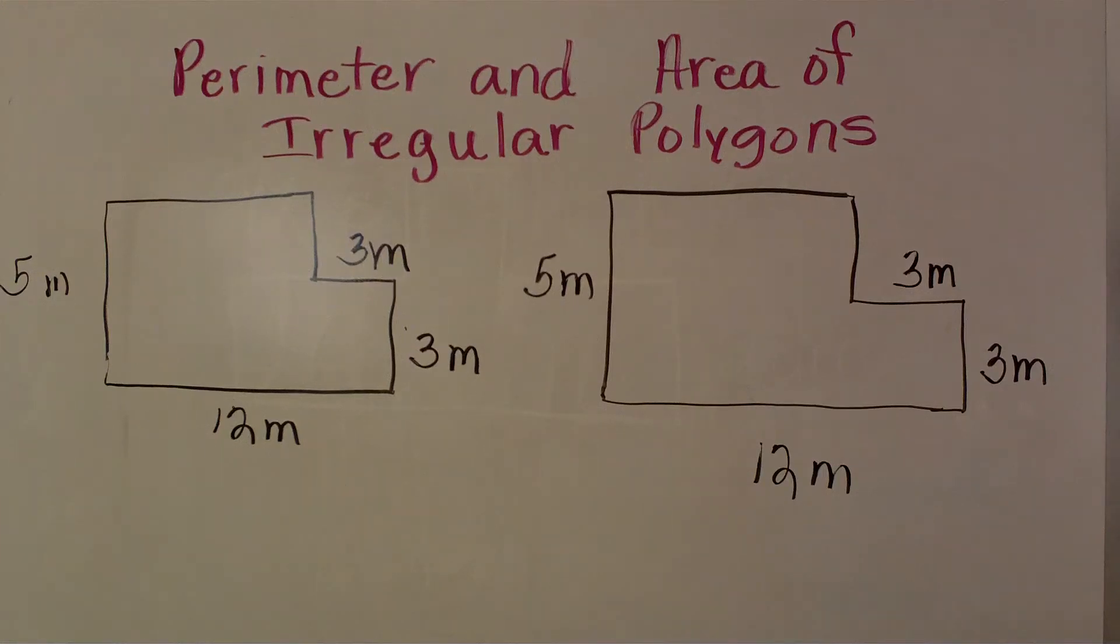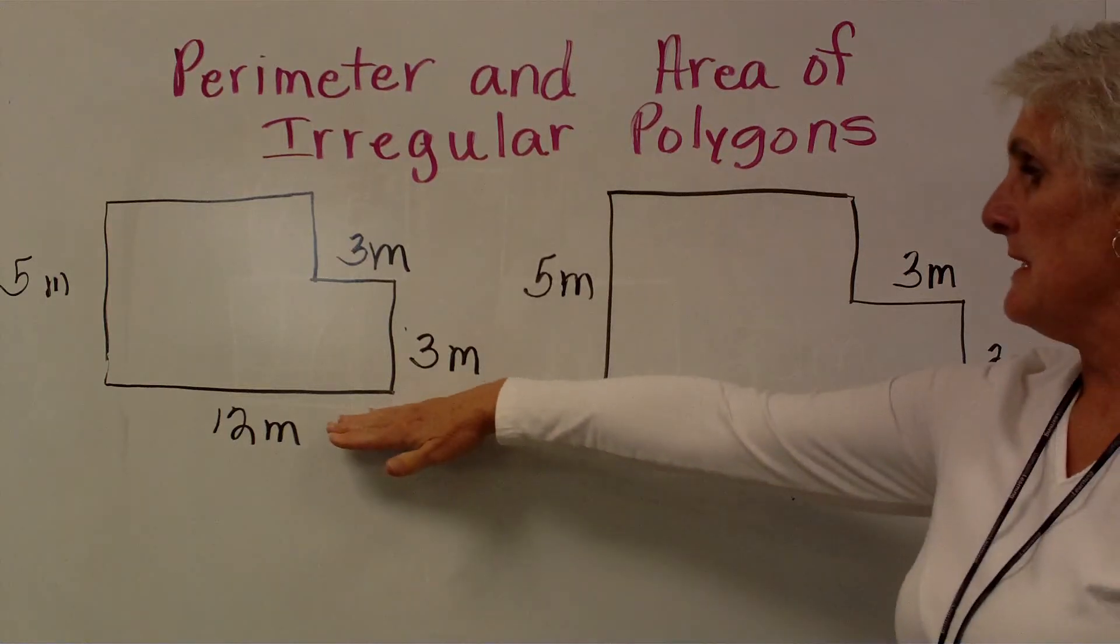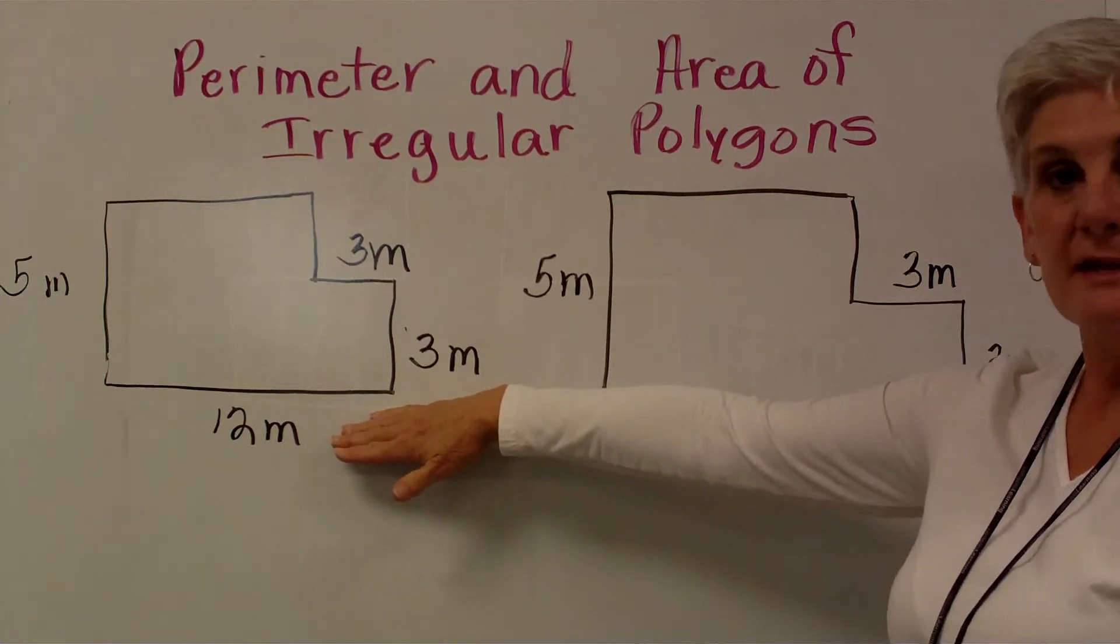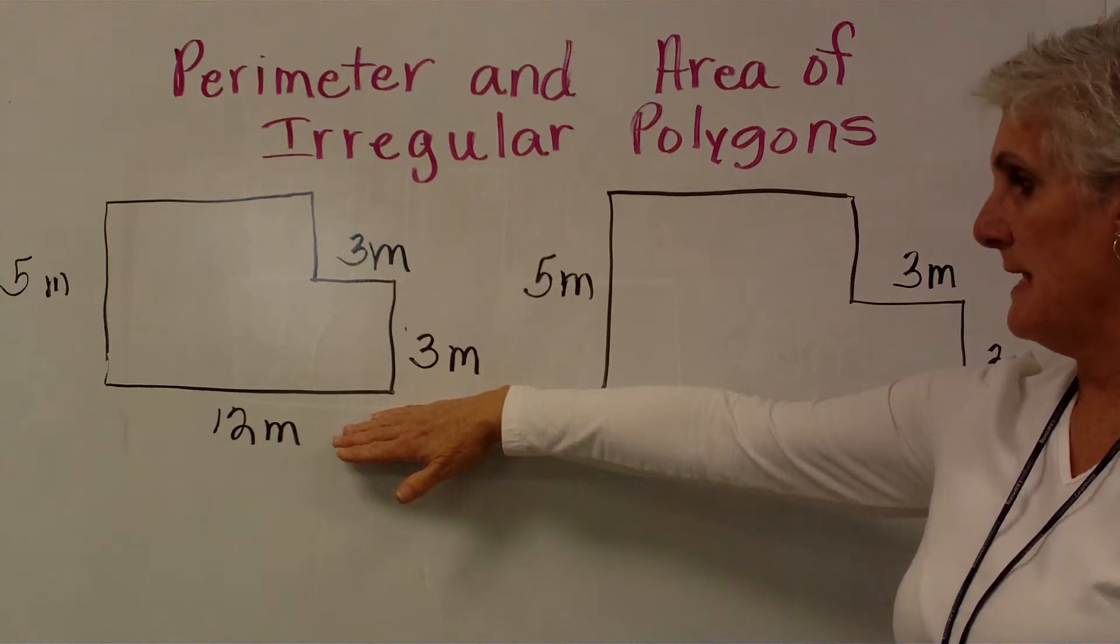Today we're going to be looking at perimeter and area of irregular polygons. An irregular polygon is made of straight lines, but the lines are not congruent, not the same.